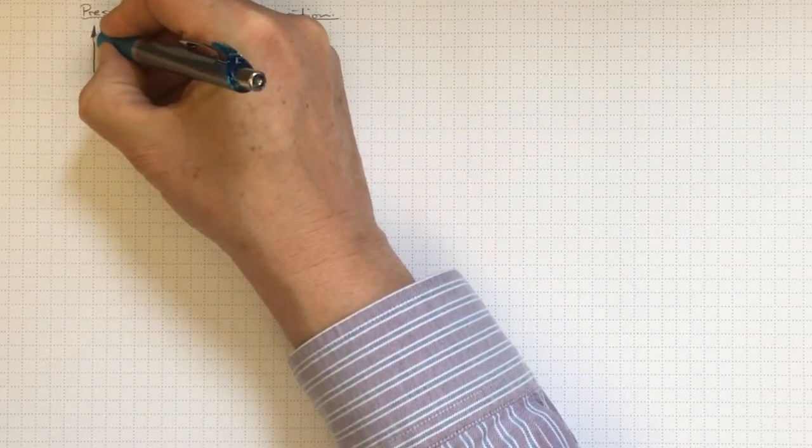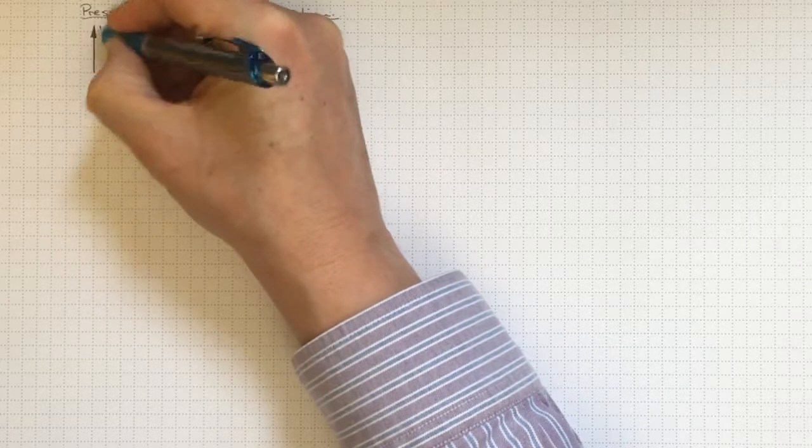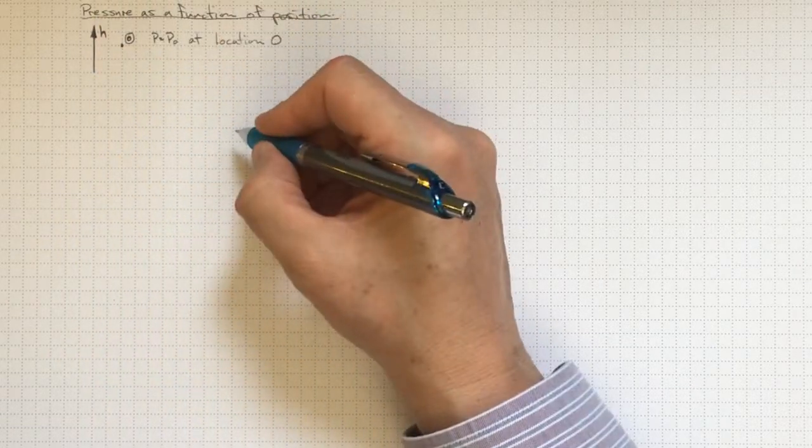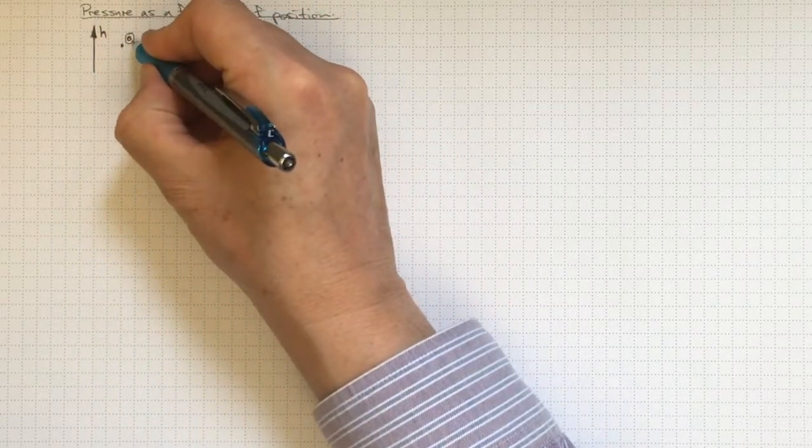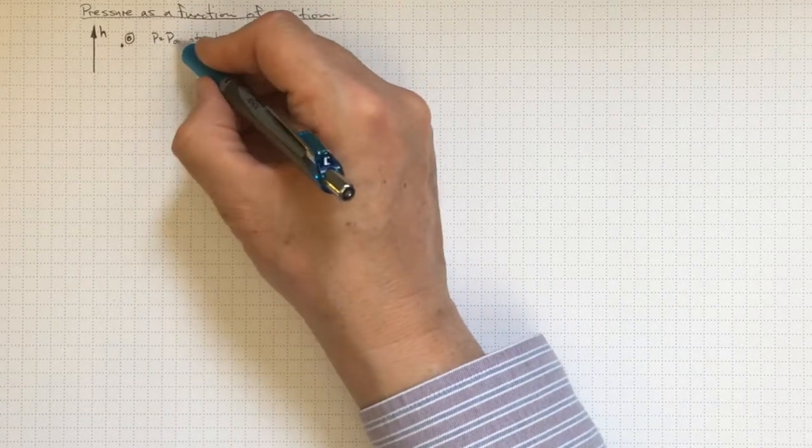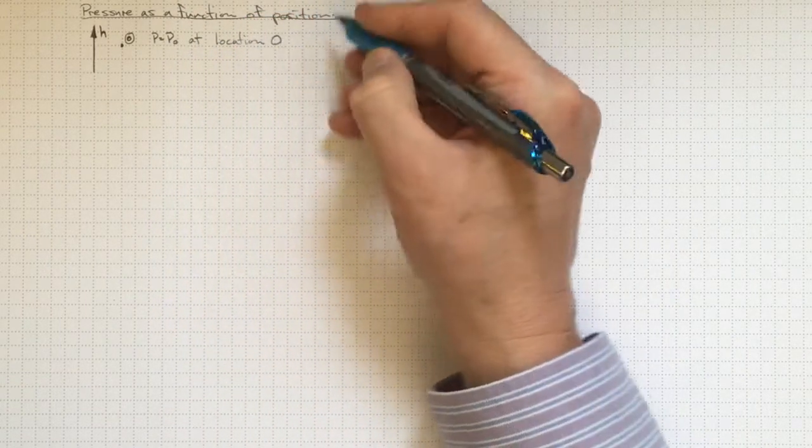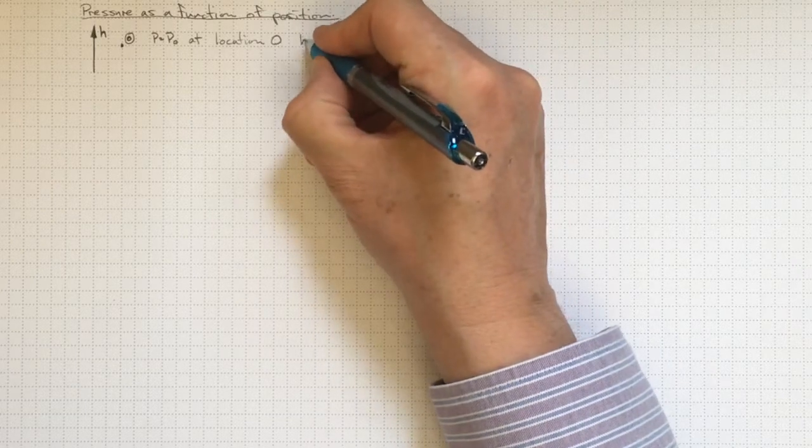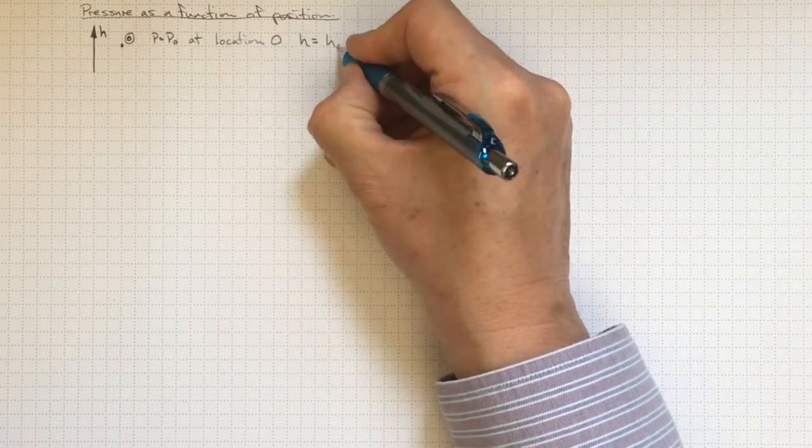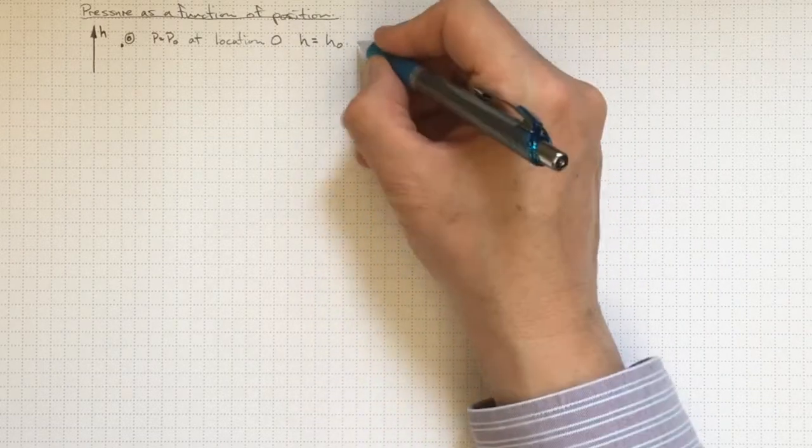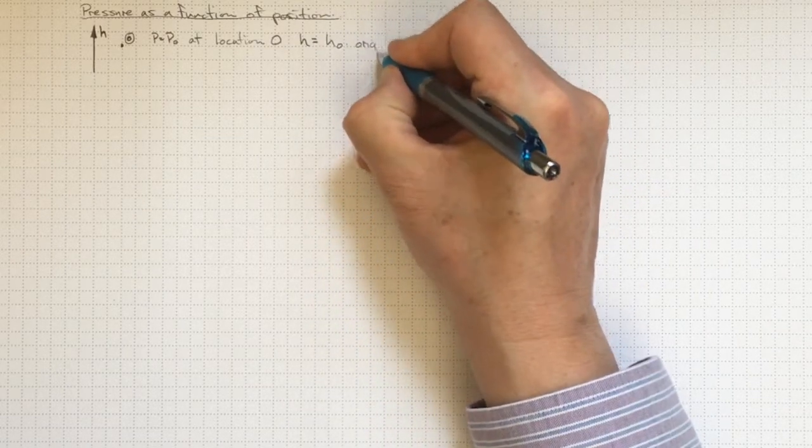So if we have elevation h, which is height positive upwards, and we have some location zero where the pressure is p-naught at that location zero, and h at location zero is some arbitrary value h-naught at the origin.